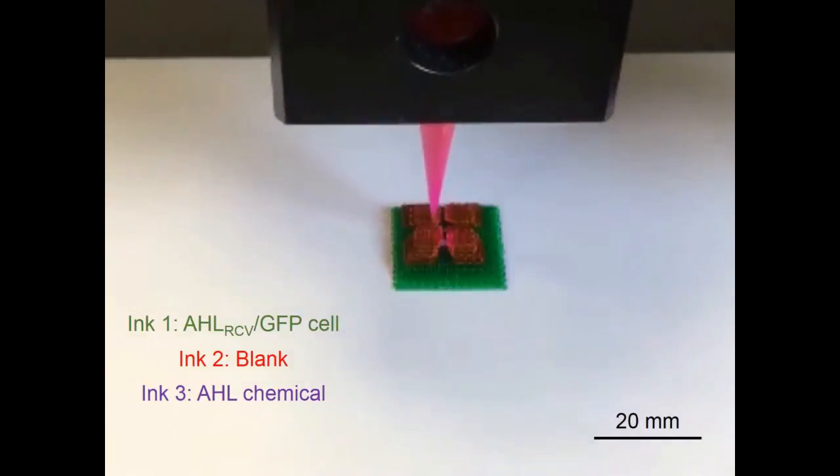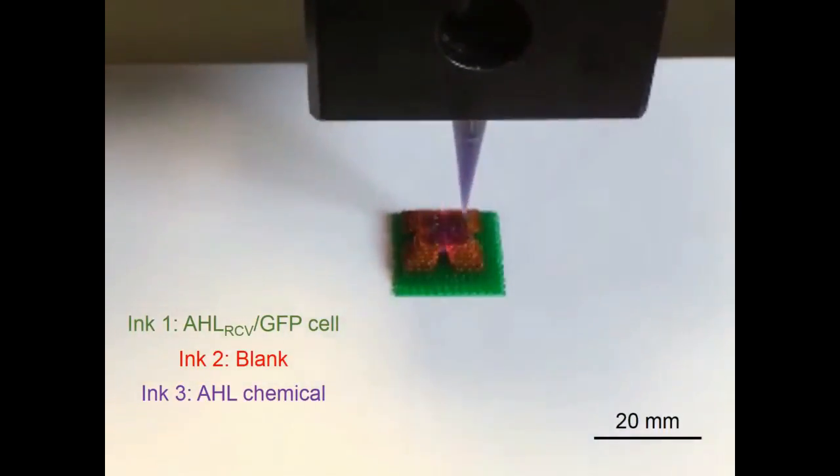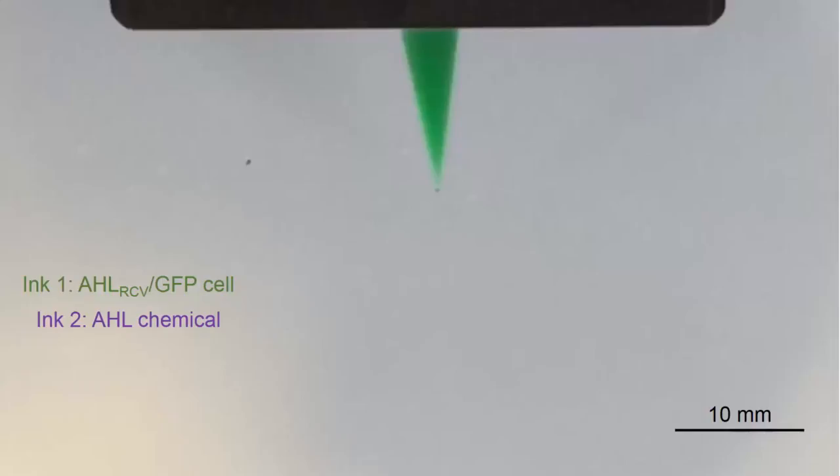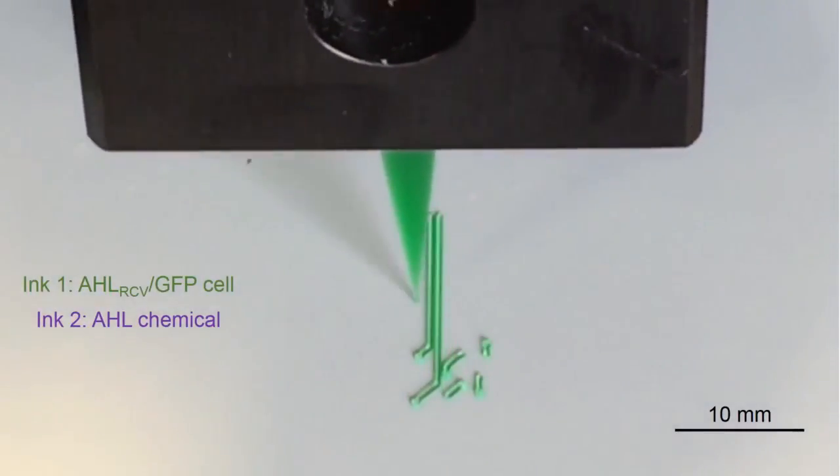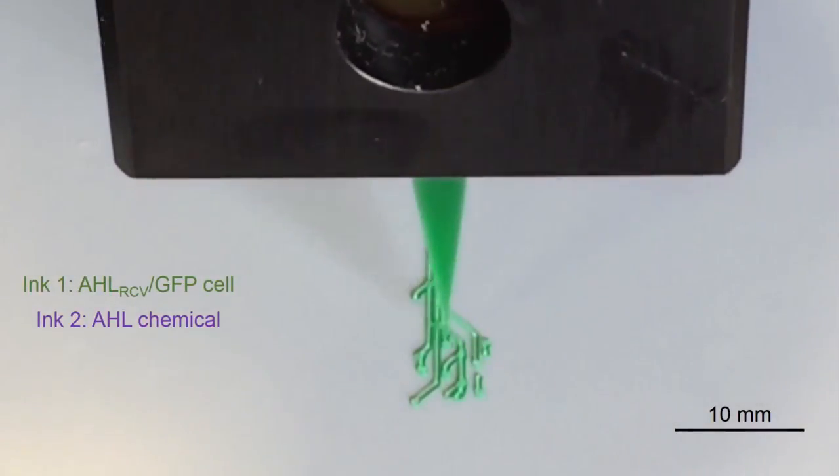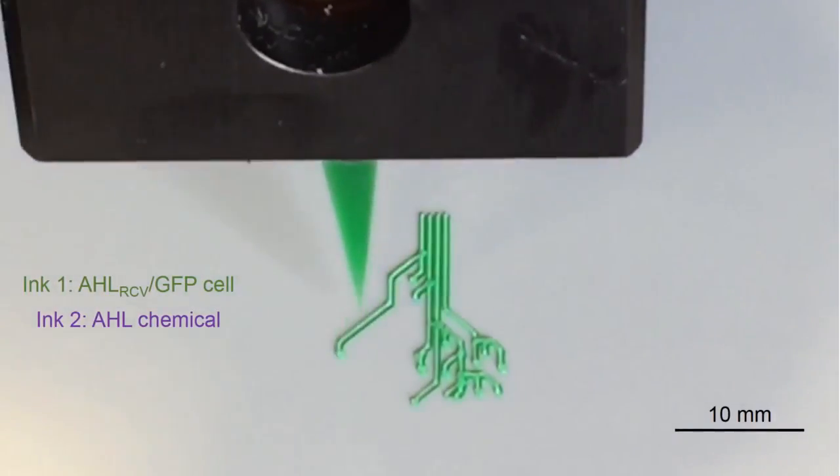To demonstrate the technique, the team printed a pattern of hydrogel with cells in the shape of a tree on an elastomer layer. After printing, they solidified or cured the patch by exposing it to ultraviolet radiation.